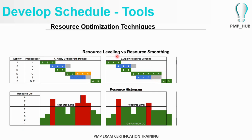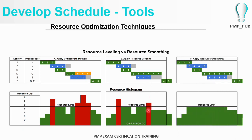Once resource leveling is done, we can perform resource smoothing. The second constraint is the project cannot have more than five resources at any given time. After resource leveling, at certain points we are using seven and six resources. Using the available float, these can be smoothed out so that we stay within the resource limit — pushing man-months to other periods. Hope you got this example.